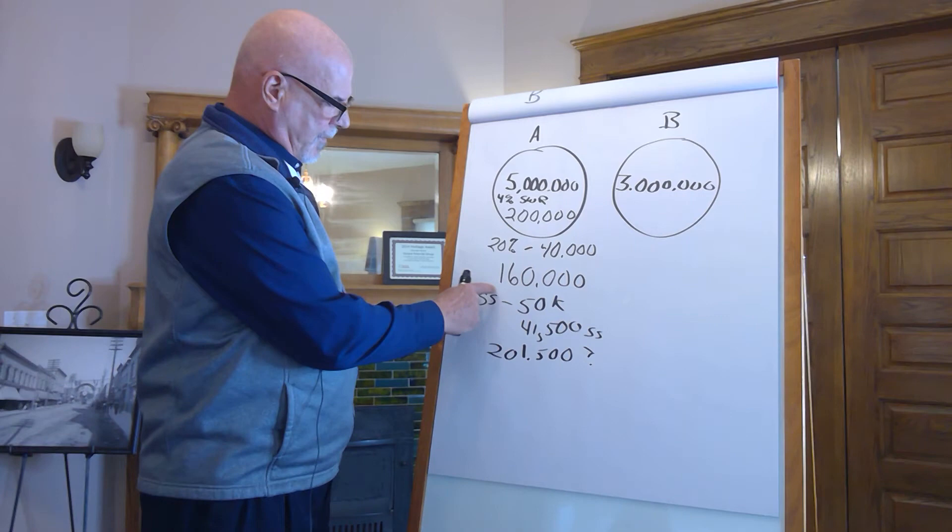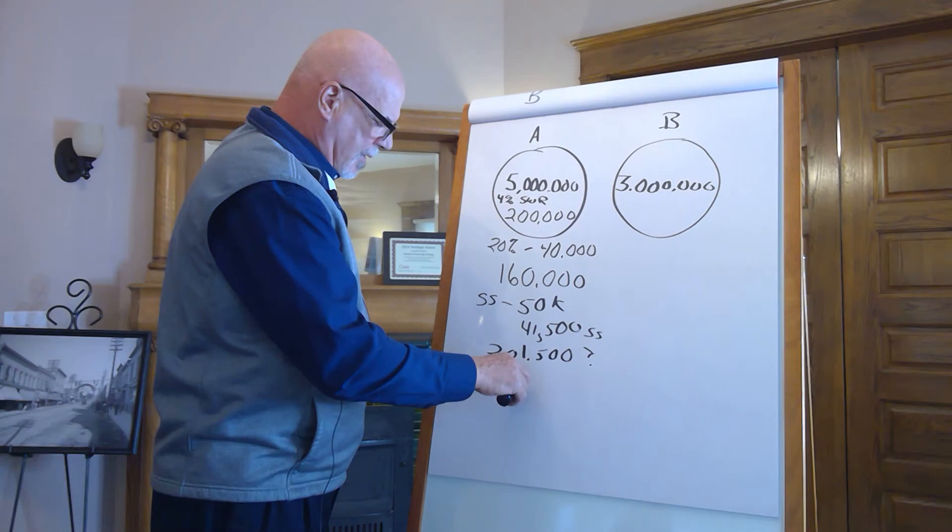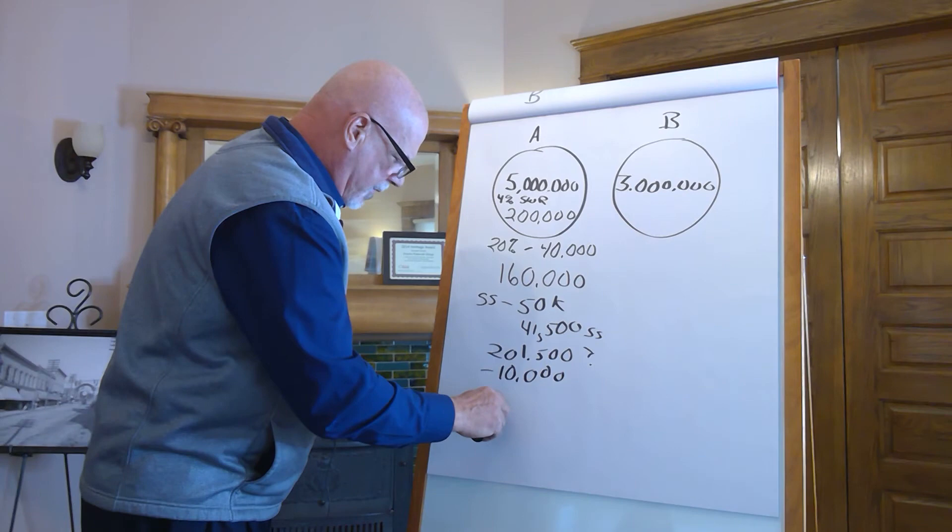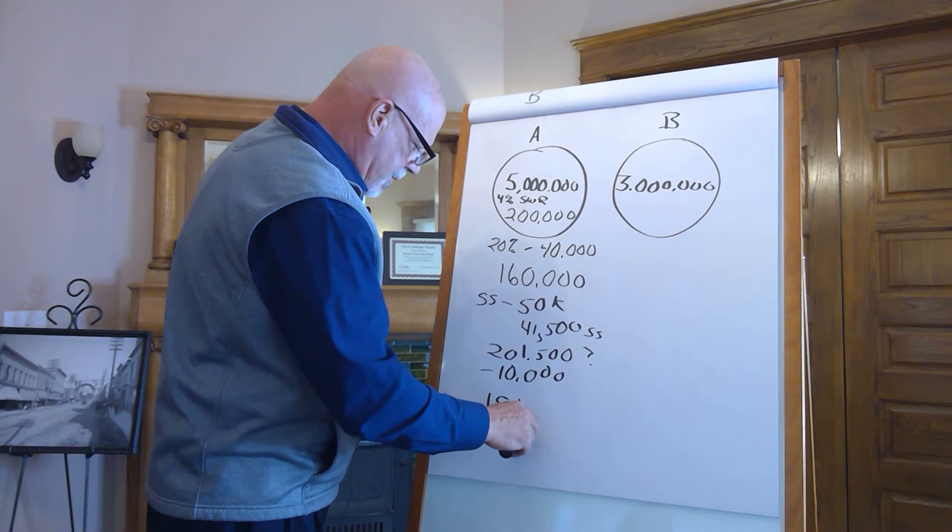Because Medicare is going to step in now and because of this income, you're going to be penalized and you're going to give up another $10,000 just in Medicare penalties. So, in this scenario, you still get to keep what, $191,500.